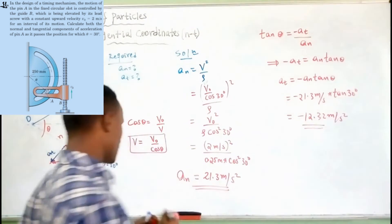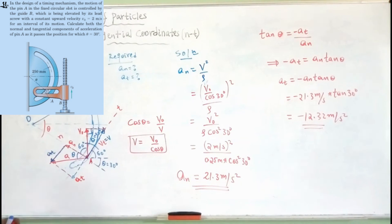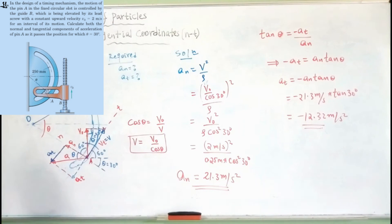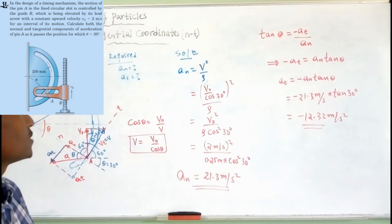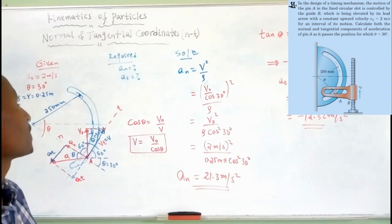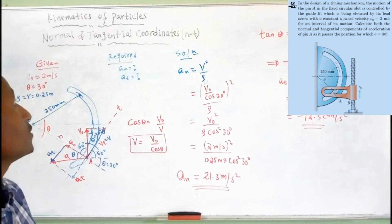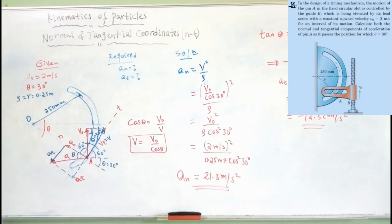The negative sign indicates that the direction of acceleration is in the negative t-axis direction. So thank you for your attention. This is Engineering Mechanics II Dynamics, from Unit 1: Kinematics of Particles, sub-topic: Normal-Tangential Axis Coordinate. Thank you for your attention, bye for now.